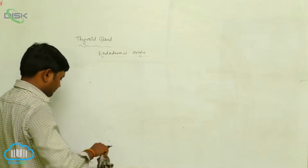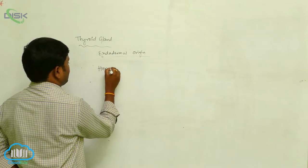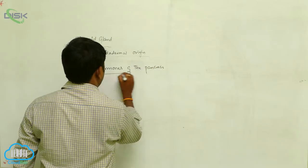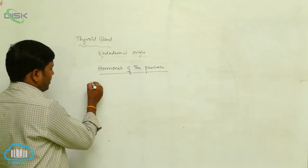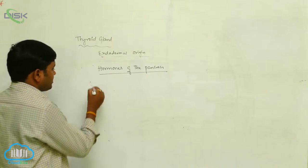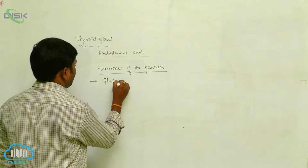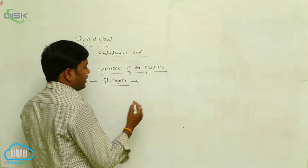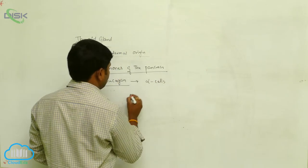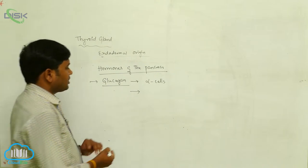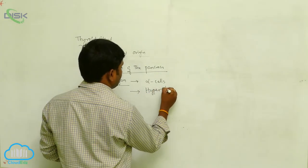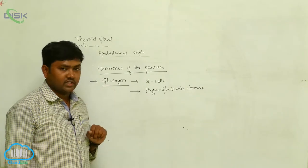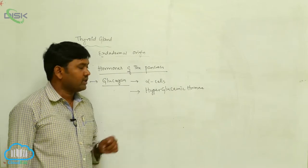There are certain types of hormones present in the pancreas. The first one is glucagon, which is the hormone derived from the alpha cells. It is also called the hyperglycemic hormone.